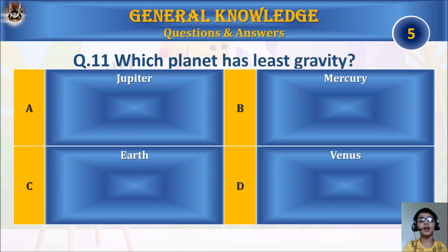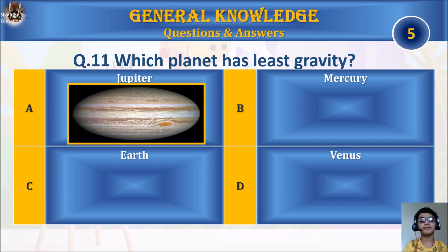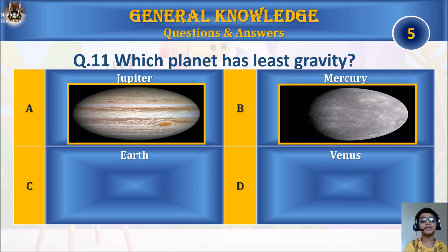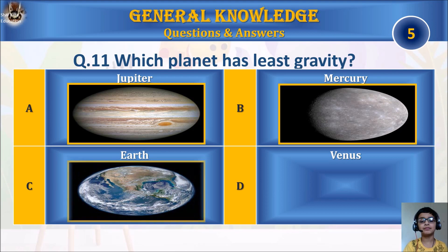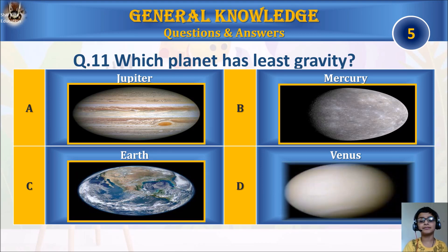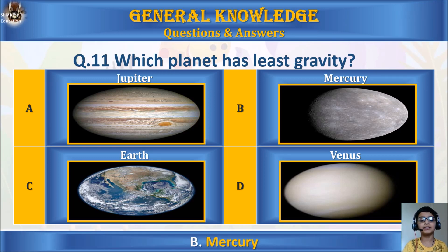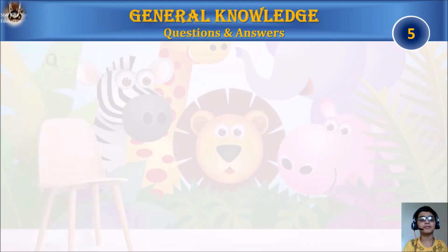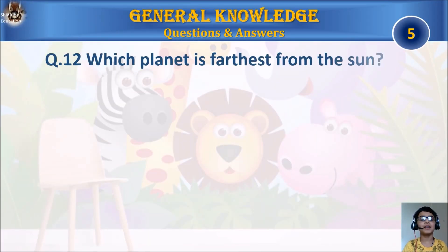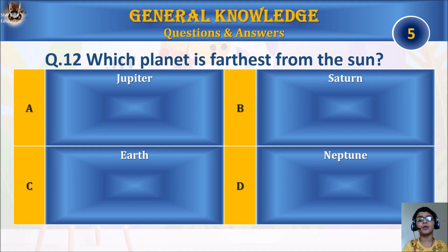Question 11: Which planet has the least gravity? A. Jupiter, B. Mercury, C. Earth, or D. Venus? Your time starts. The answer is B. Mercury.